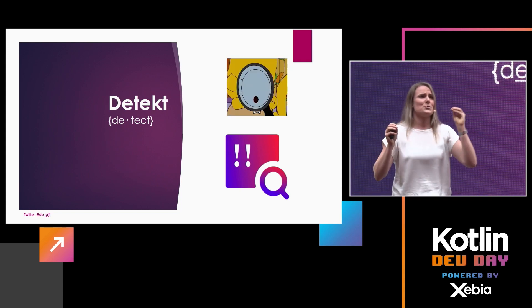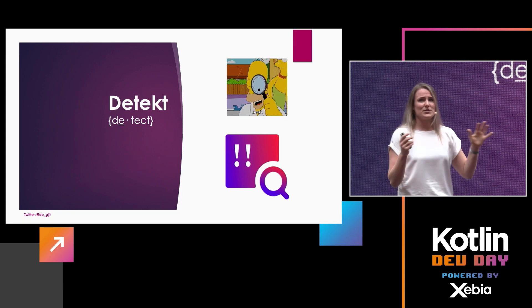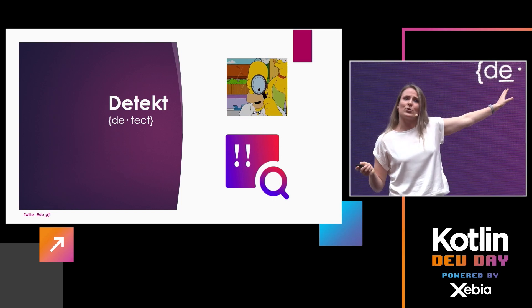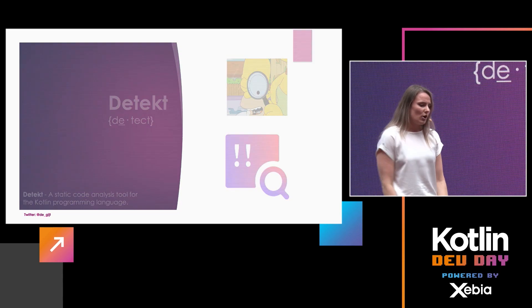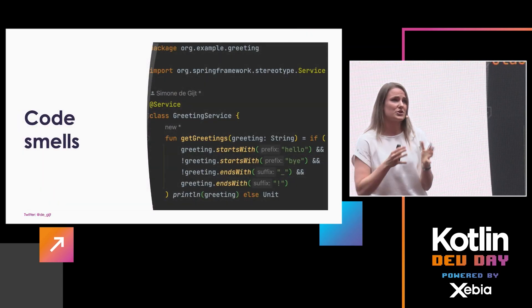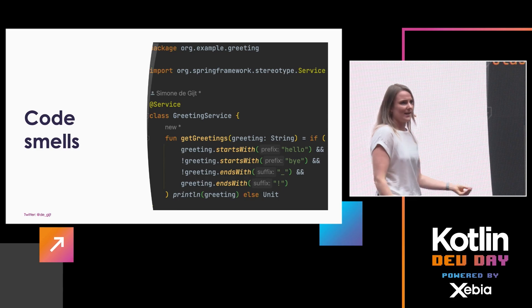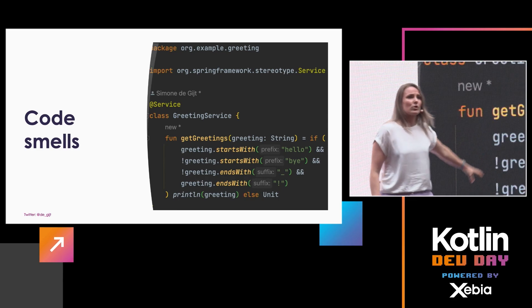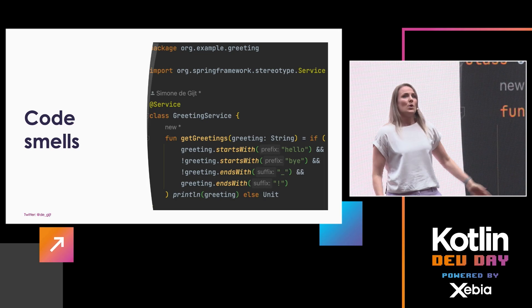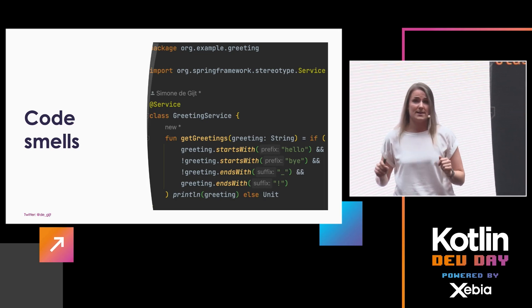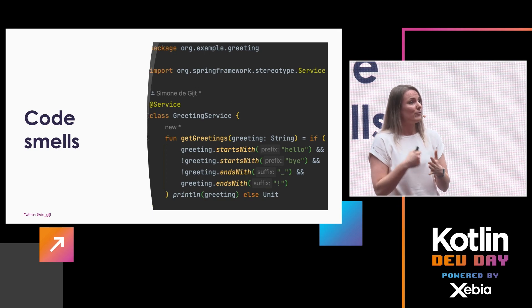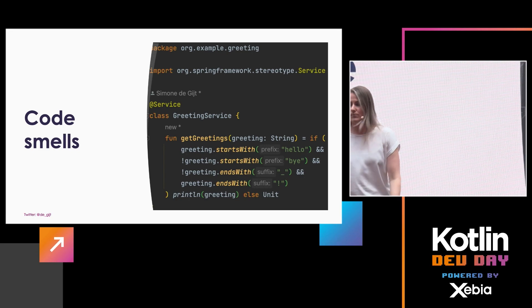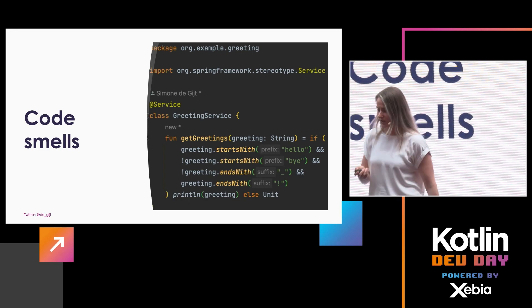I also want to point out Detekt — I'm not going to go over it in detail because I don't have time, but it's a great plugin. It's more about code smells rather than style. In this example, you have four conditions in your if statement, which Detekt would flag because it has reached the complexity threshold — four conditions is too complex — so it will fail the build. It's a pretty nice tool as well.